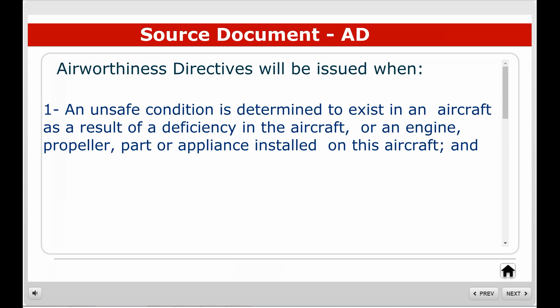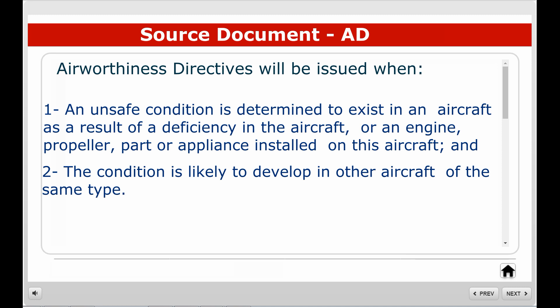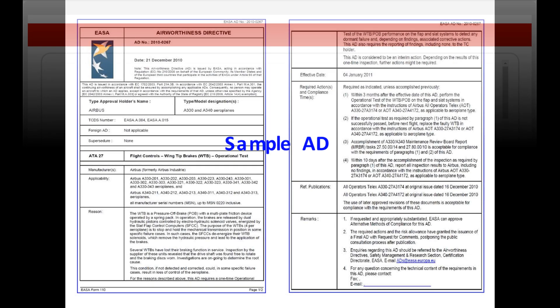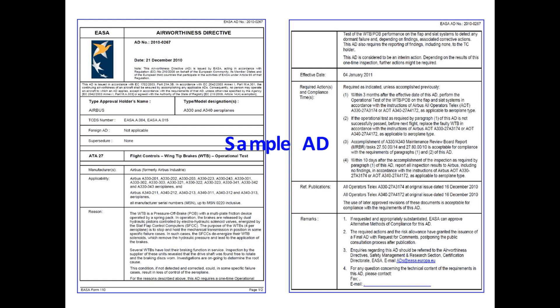Airworthiness directives will be issued when: number one, an unsafe condition is determined to exist in an aircraft as a result of a deficiency in the aircraft, or engine, propeller, part, or appliance installed on the aircraft; and two, the condition is likely to develop in other aircraft of the same type.